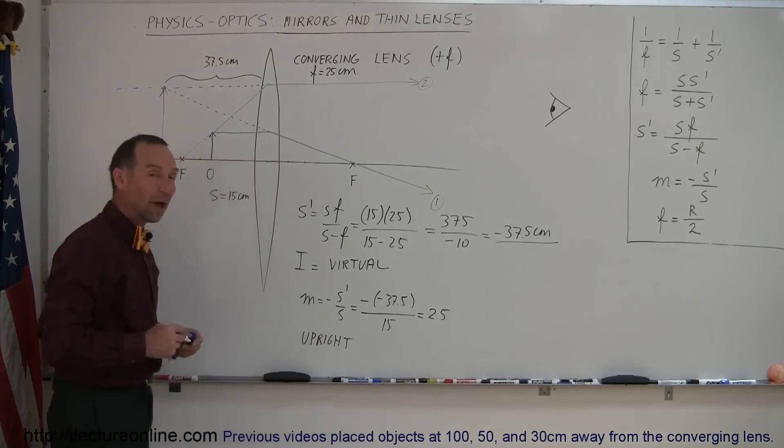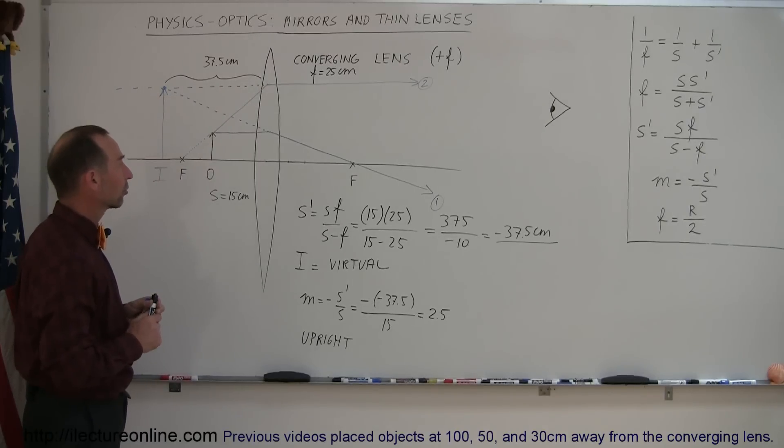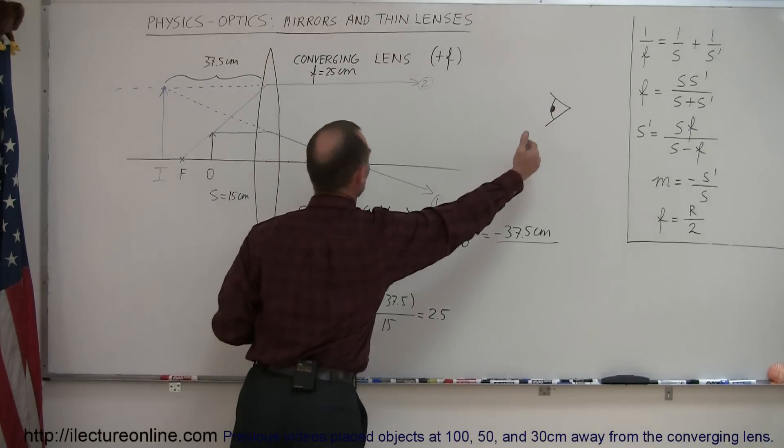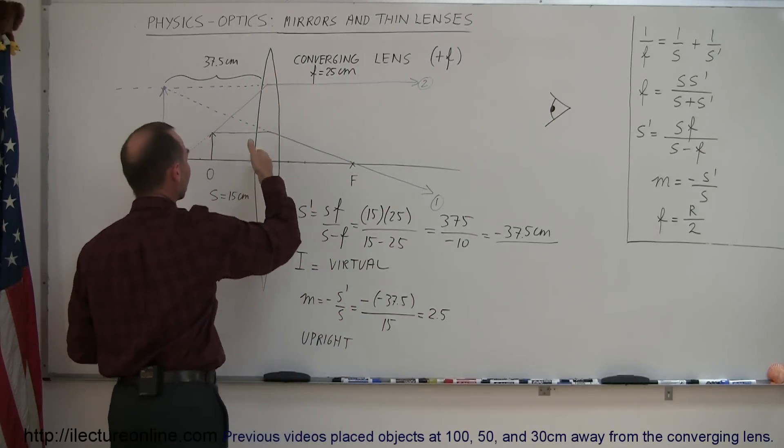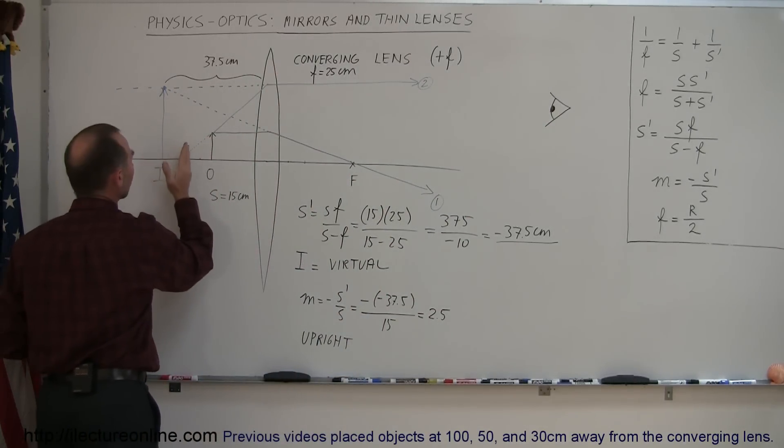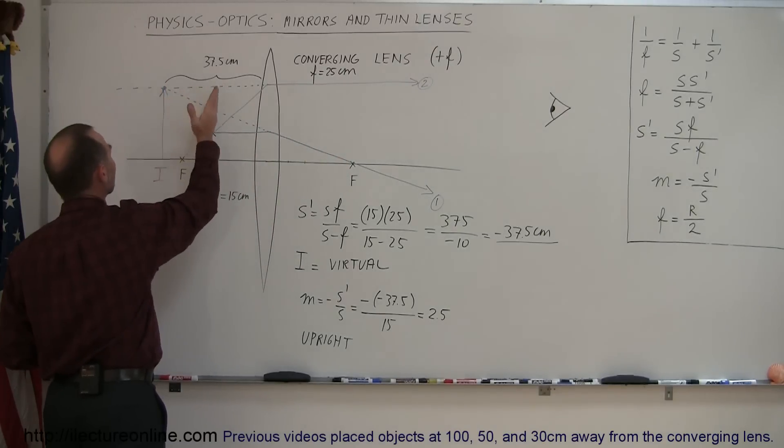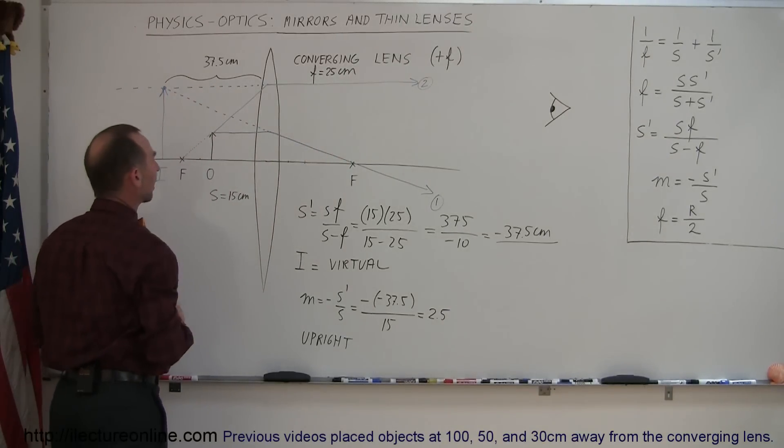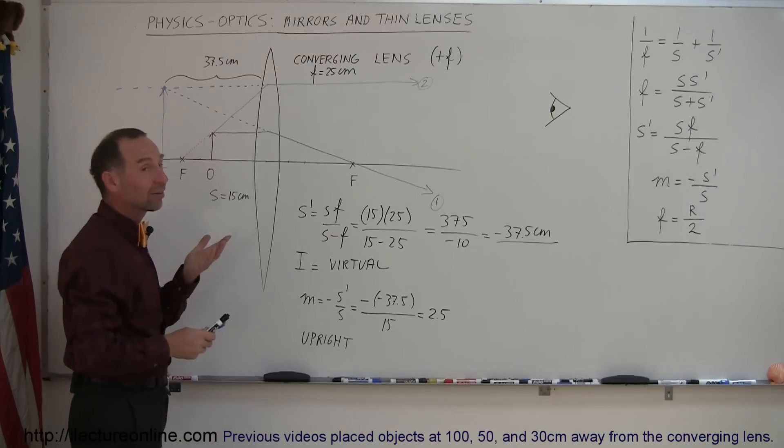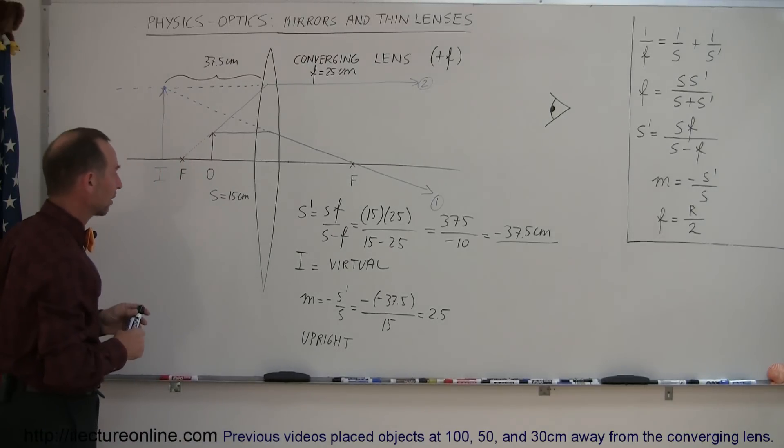And this is really an example of how a magnifying glass works. If an observer looks through a lens, that's a converging lens like this, and an object is placed closer to the lens than the focal point, the observer will see a virtual image on the other side of the lens that looks a lot larger than the object. And that's exactly what we do when we use magnifying glasses.